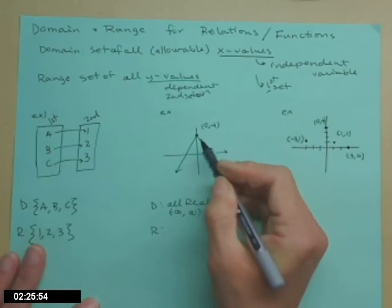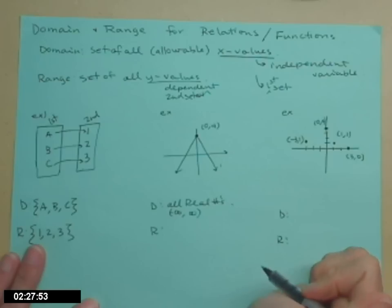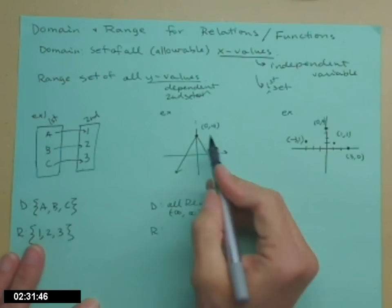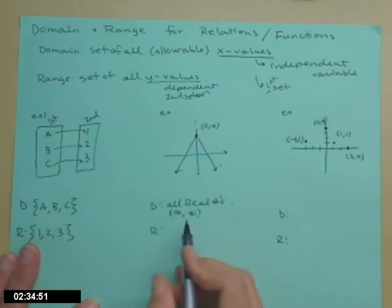The range, however, never goes above y equals 4. We don't have any higher y values. So it's 4 and below. With interval notation though, we always start at the smallest number. So that's going to be the furthest negative. So it goes from negative infinity up to 4. The 4 is included, so we're going to go ahead and put a bracket on that 4.